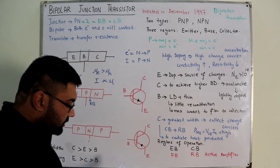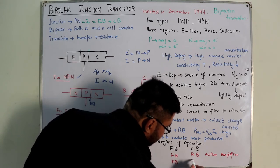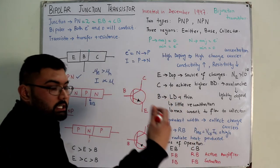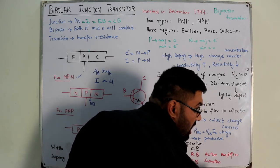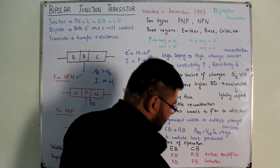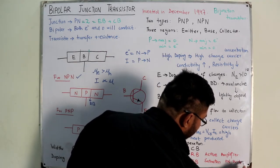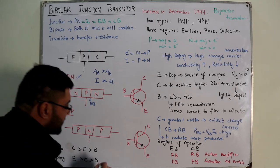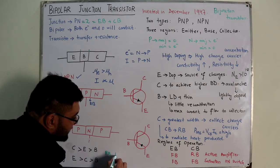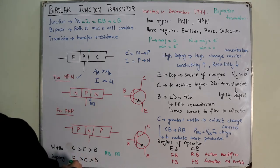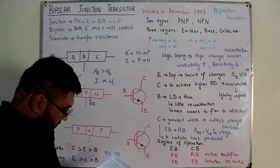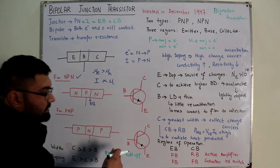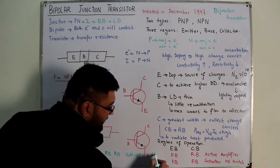The second mode is saturation mode, when both junctions are forward biased. In saturation mode, the BJT acts as a logical ON switch. When the emitter-base is reverse biased and the collector-base is forward biased, that is an inverse active mode. When both junctions are reverse biased, that is the cutoff mode, and the BJT acts as an OFF switch.